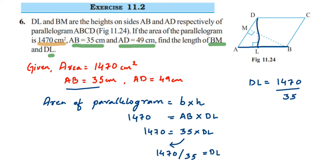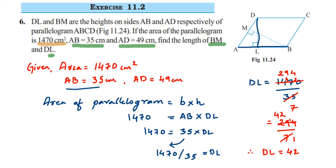We cancel 1470 ÷ 35 by simplifying step by step. Dividing 1470 by 5 gives 294, then dividing 294 by 7 gives 42. Therefore, DL = 42 cm.